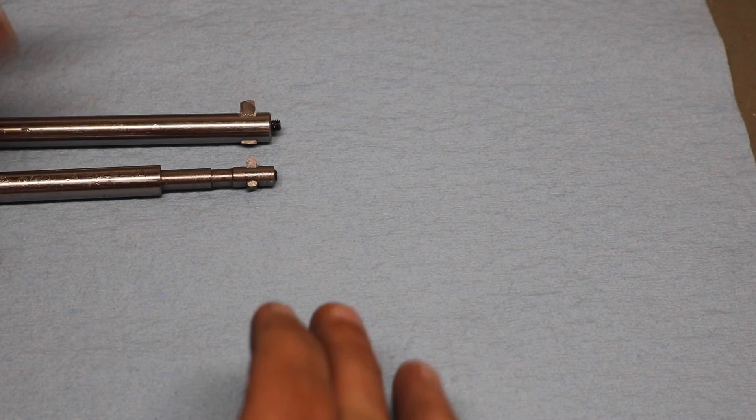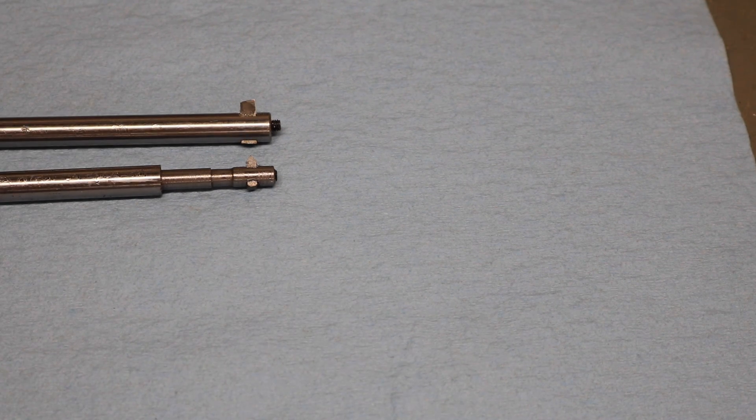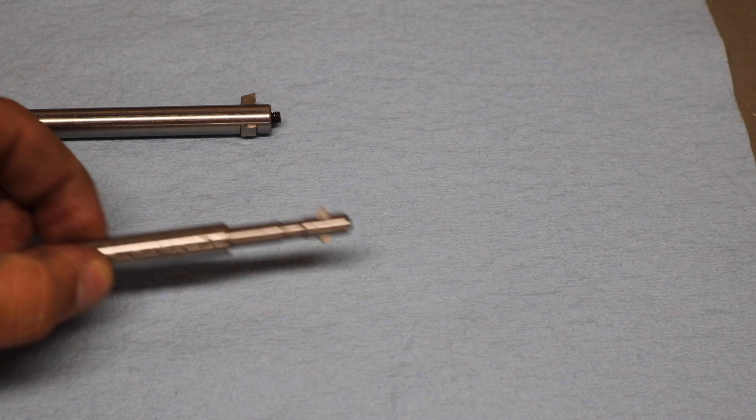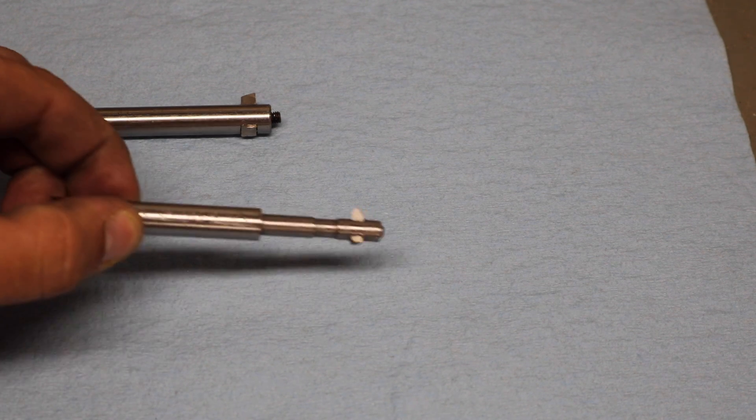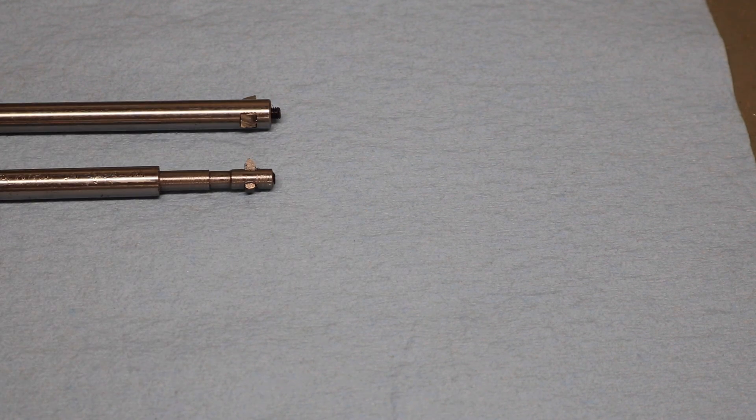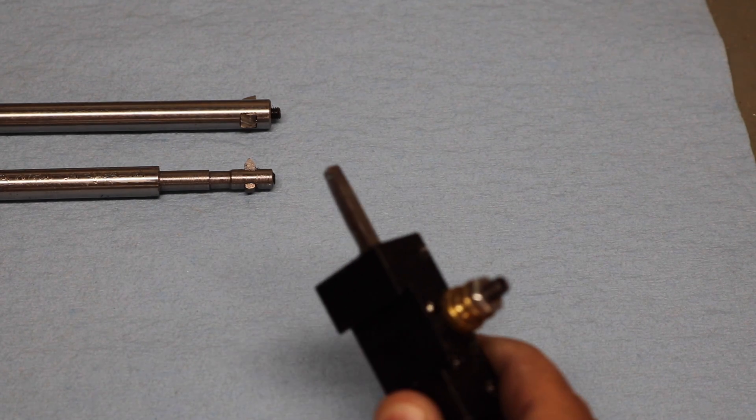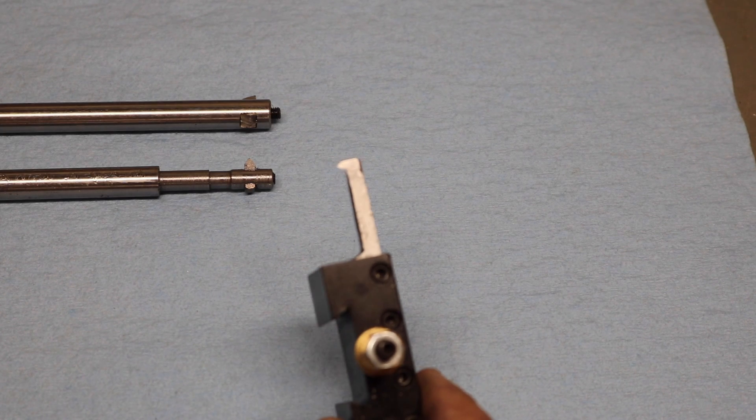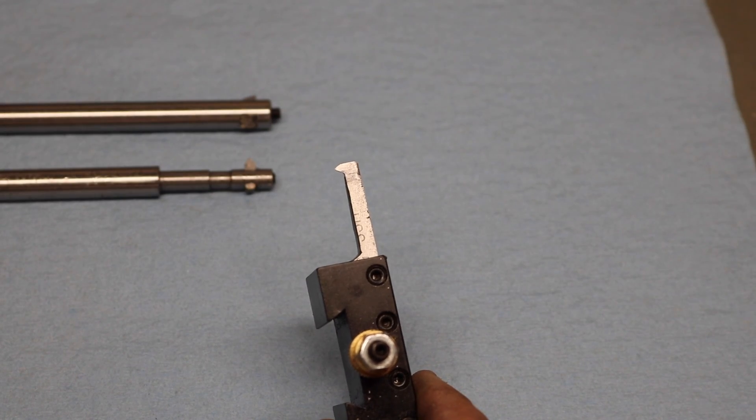As you can see, those are two high speed steel internal boring bars and this one is what I have used to cut every single internal thread that I've cut on my lathe, up until just the other day. I actually ground an internal thread cutting tool out of a square blank and it seems to work pretty decently.